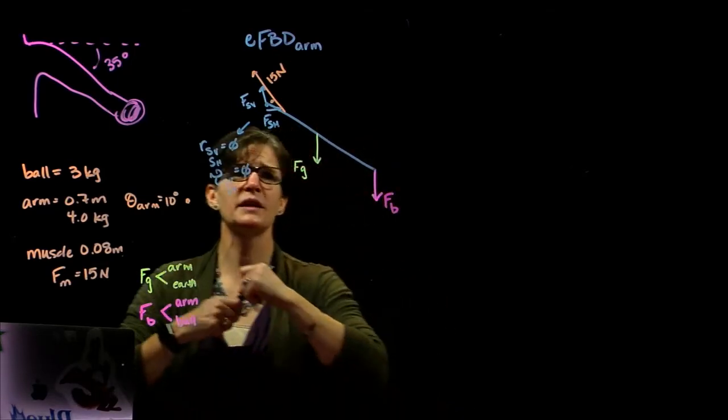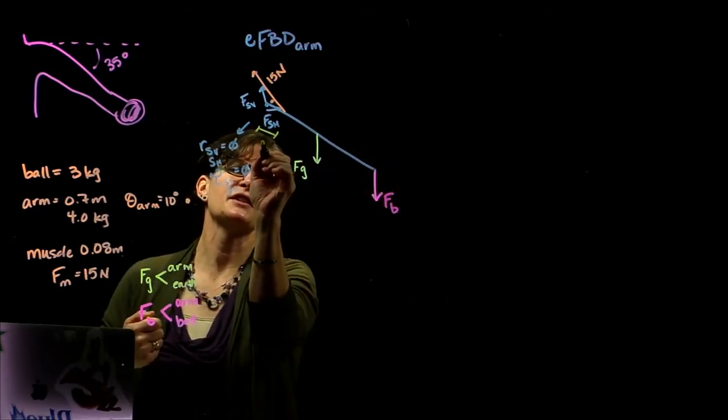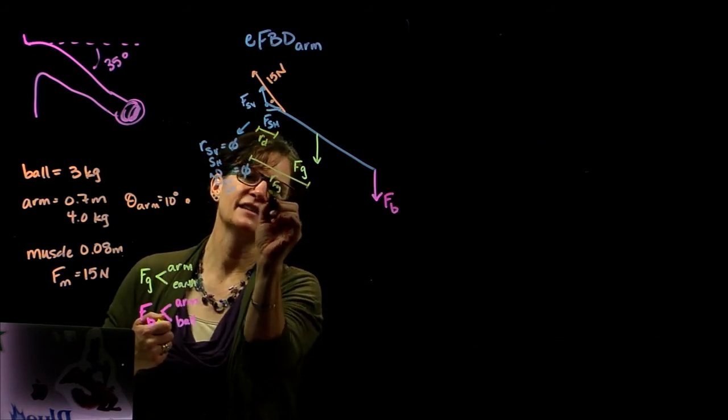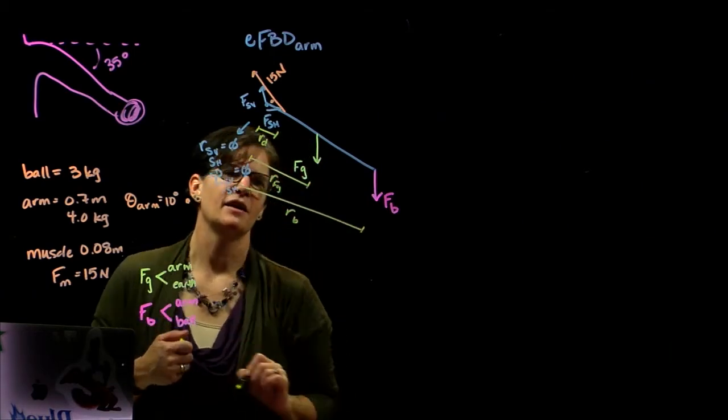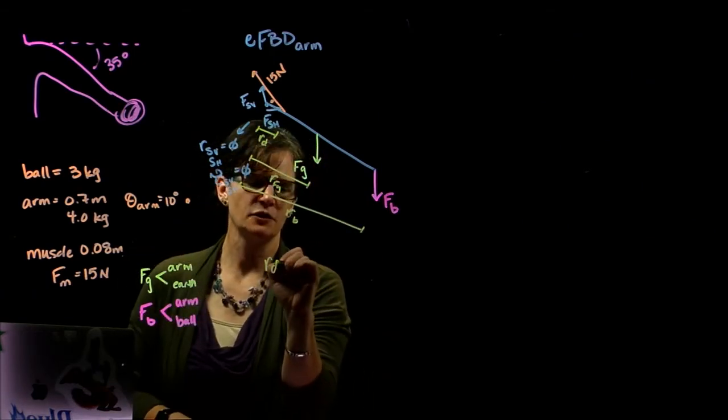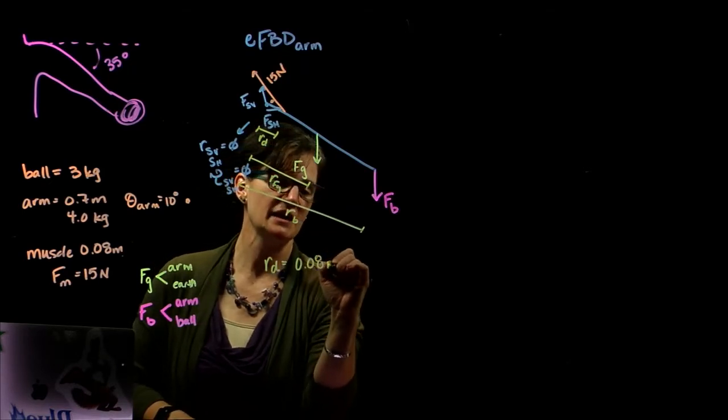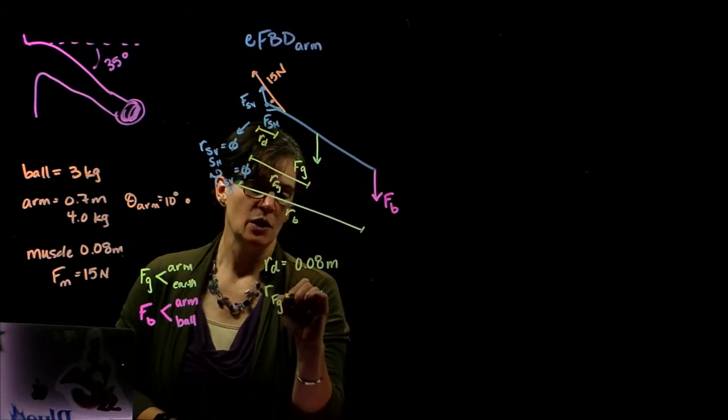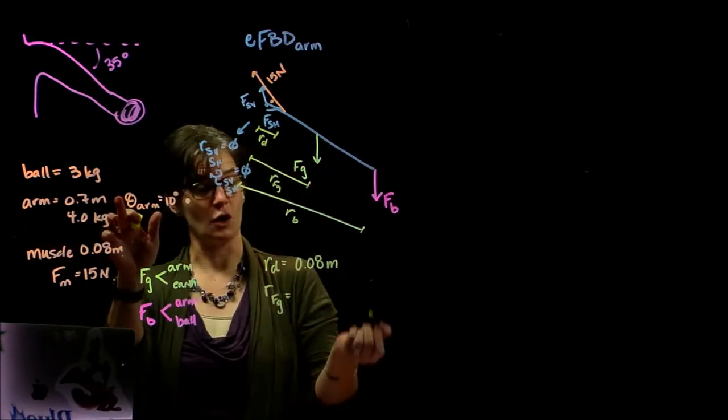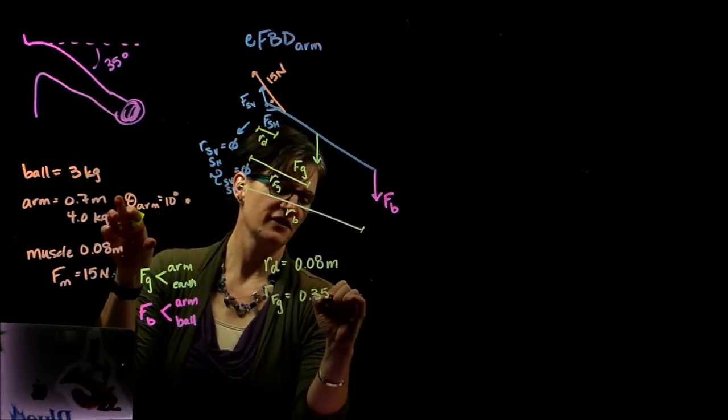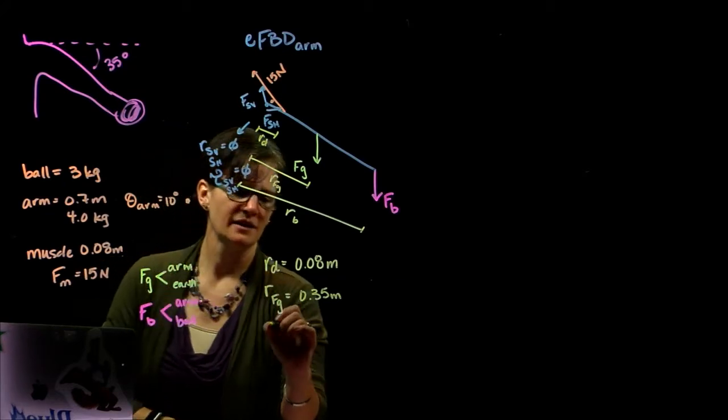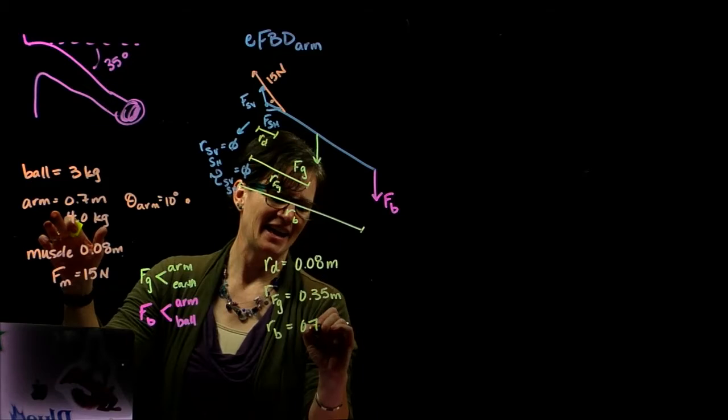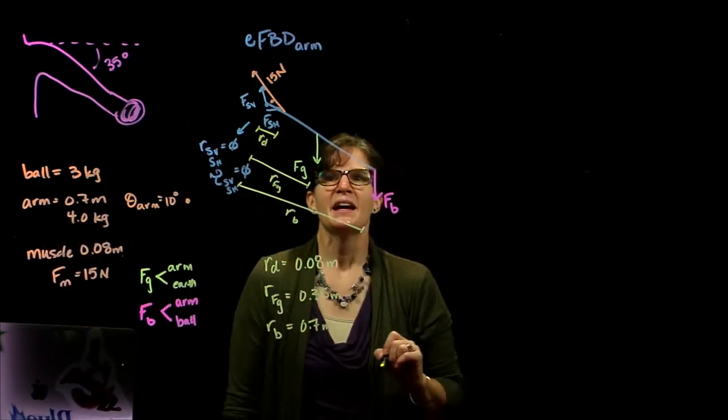All right. So if that's our pivot point, we can then look at the varying radii. Here's the radius of the deltoid muscle, the radius of the force of gravity, and the radius of the ball. So the radius of the deltoid muscle, we are told, is 0.08 meters from the shoulder joint. That was given in the problem. The radius for the force of gravity, well, we're told that the arm is 0.7 meters long. And so we have 0.035 meters to its geometric center. And the radius of the ball, well, the arm is 0.7 meters long, and the ball is being held at the end. So that radius is 0.7 meters.